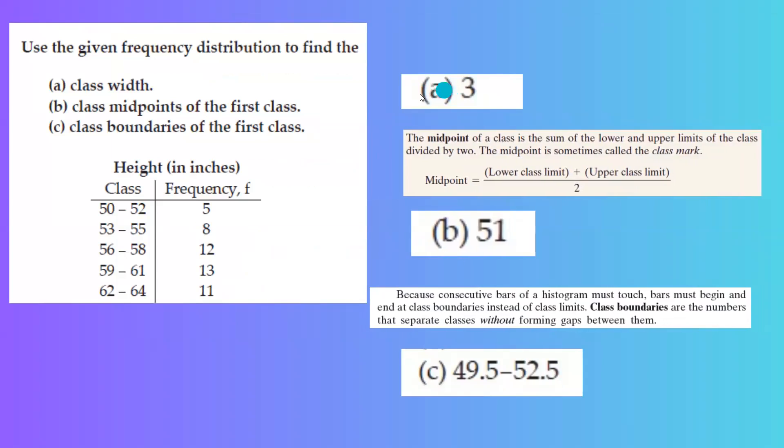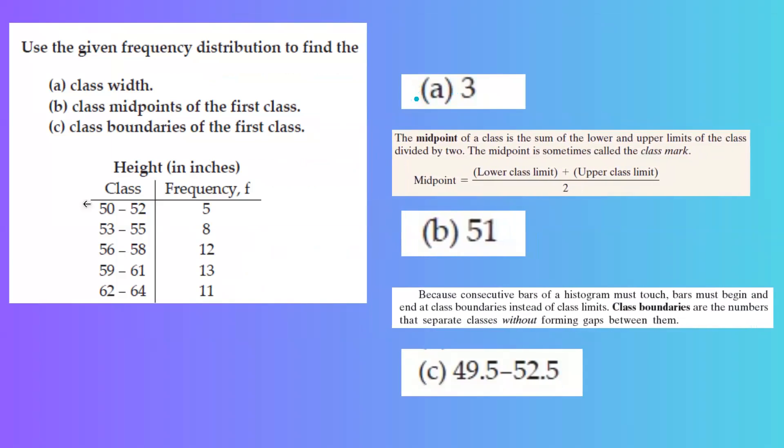First of all, the class width is 3. Why is that? The difference between 50 and 53 is 3, 53 and 56 is 3, 56 and 59 is 3, 59 and 62 is 3.